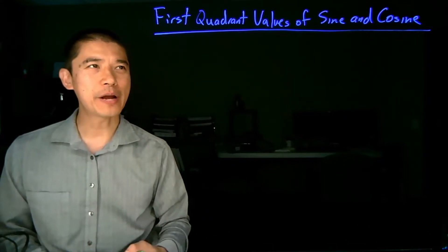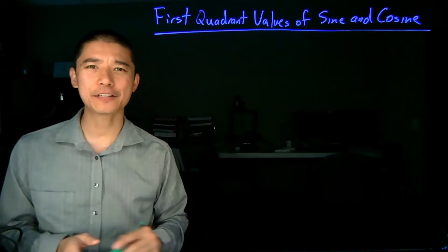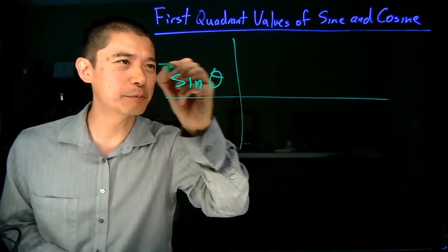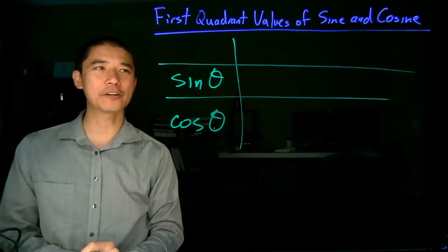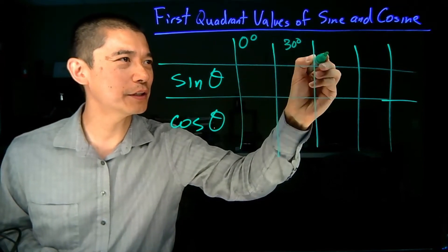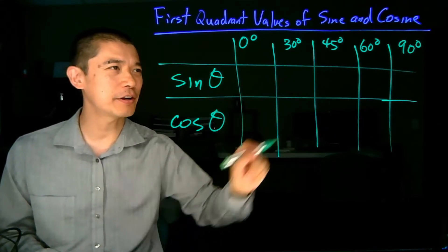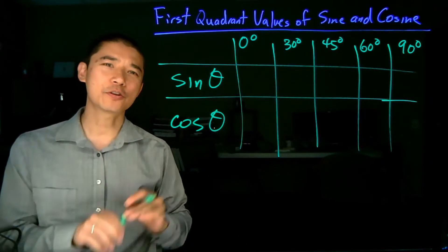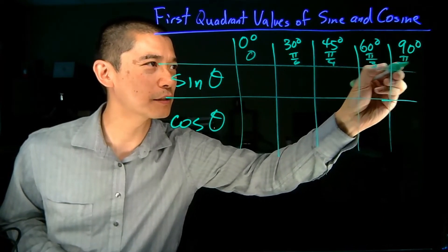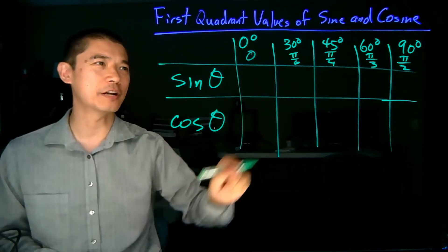Because we can relate all the values on the unit circle back to the first quadrant, it's particularly useful to know the first quadrant values for the sine and cosine functions. Here is a chart you can memorize to help you build out everything else. We have the sine and cosine functions, and the angles: 0 degrees, 30 degrees, 45 degrees, 60 degrees, and 90 degrees. In radians these are 0, π over 6, π over 4, π over 3, and π over 2. Conveniently, they are all π in the numerator and the denominators count down: 6, 4, 3, 2.